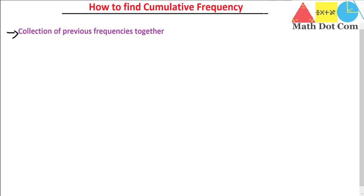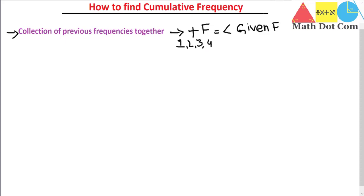Understanding 'collection of previous frequencies together' can be difficult, so let me explain it in an easier way. Rather than 'collection,' you can say addition — addition of frequencies equal to and less than the given value. For example, if you want to find the cumulative frequency of 3 from a table containing values 1, 2, 3, 4, you add the frequencies at 3, 2, and 1. So the cumulative frequency at 3 is the sum of all three levels.